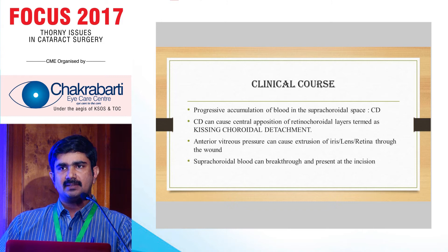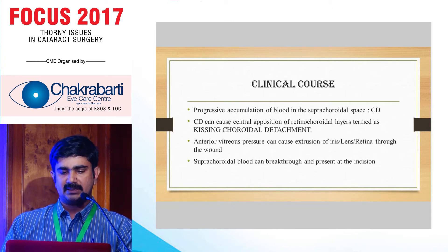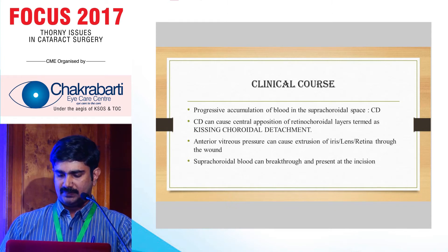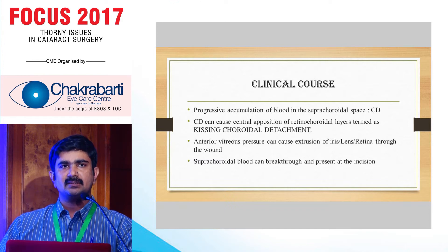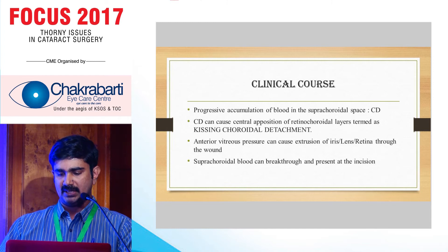Once bleeding begins, the choroid starts getting opposed from both sides, the retinas come towards the centre and touch at the centre, causing central retino-choroidal opposition. Further progression can push all contents of the vitreous cavity through the wound — the iris, lens, vitreous — everything getting pushed through the wound.